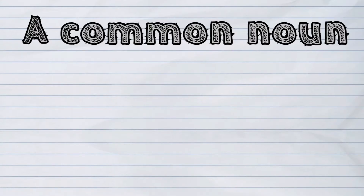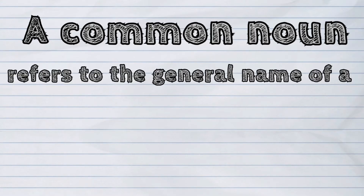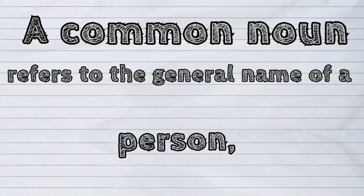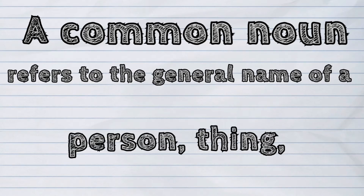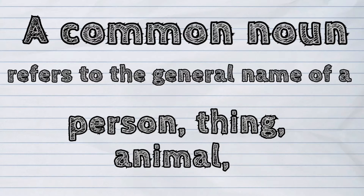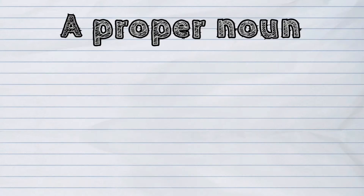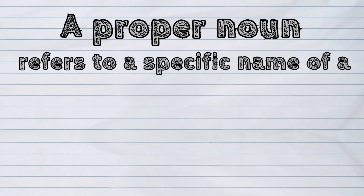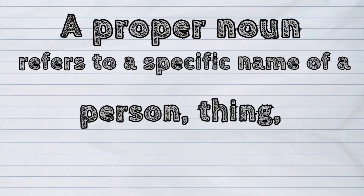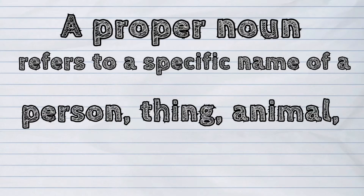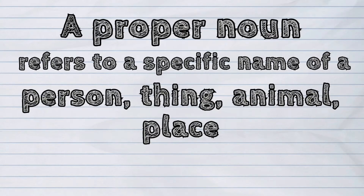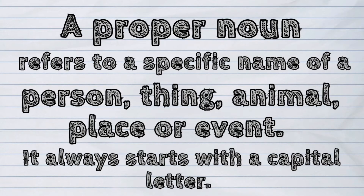A common noun refers to the general name of a person, thing, animal, place, or event. On the other hand, a proper noun refers to the specific name of a person, thing, animal, place, or event. It always starts with a capital letter.